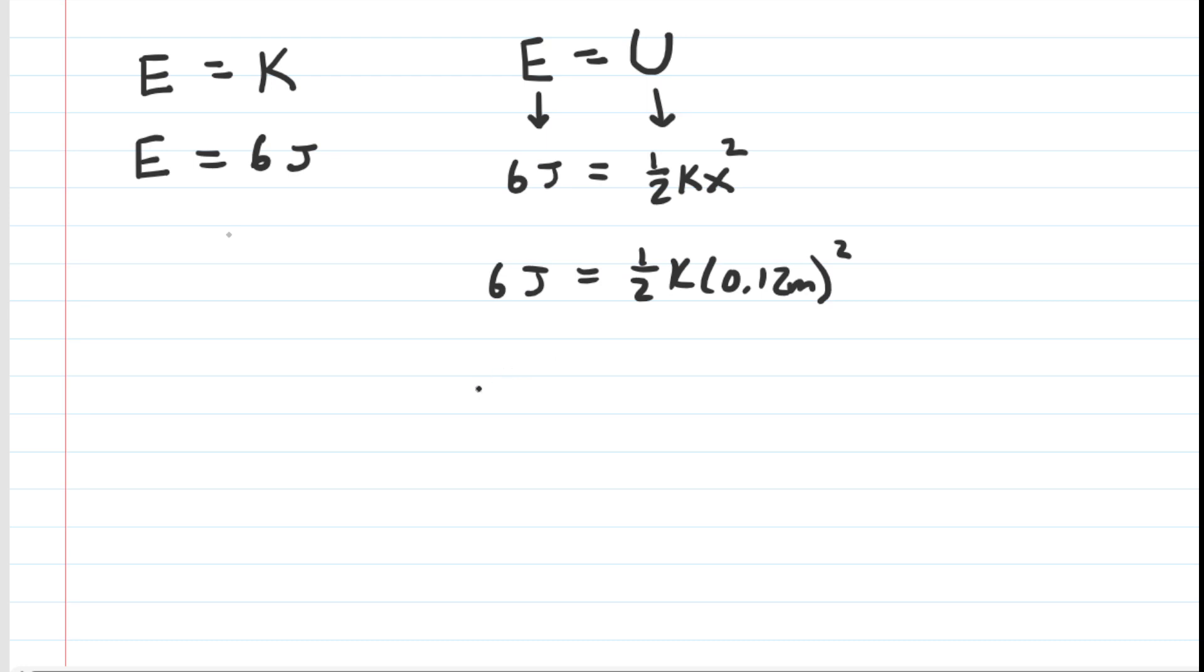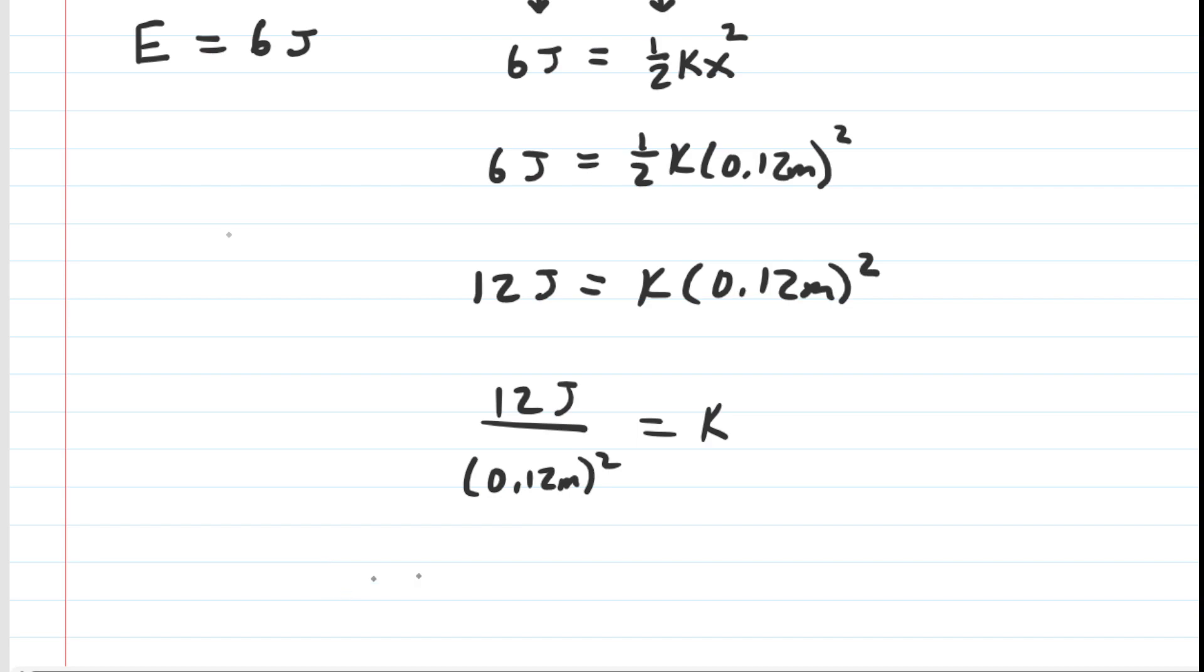So you multiply both sides of the equation by 2 so that you can cancel out the 1 half and then divide both sides by the 0.12 squared. And when you do that, you will get a value of approximately 833. And the standard unit of the spring constant is newtons per meter. So this is the correct answer to the question.